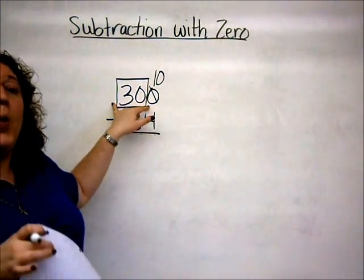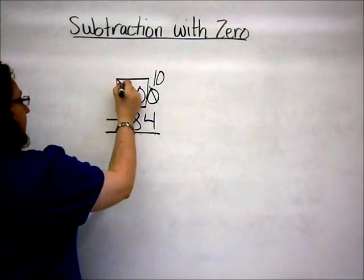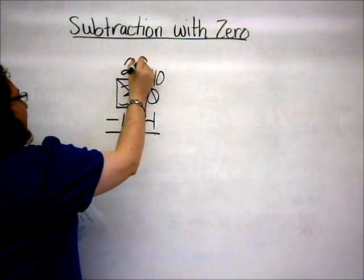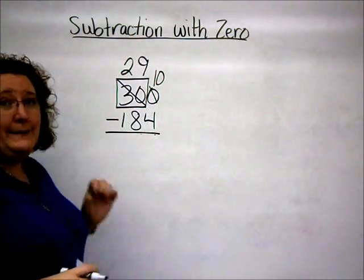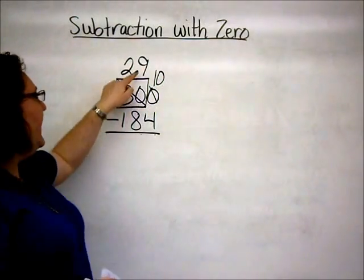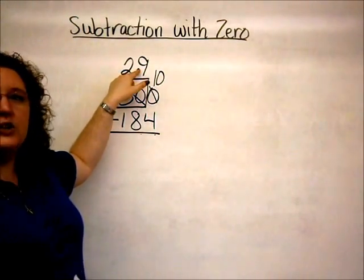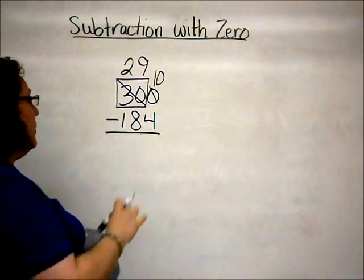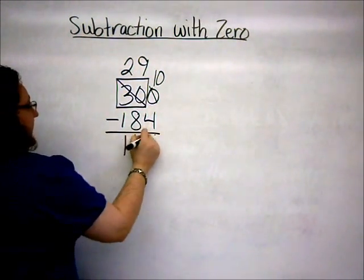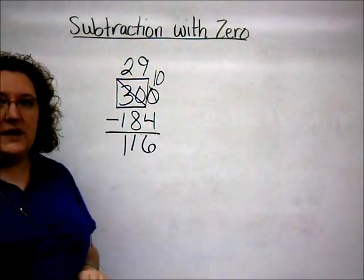We subtract one from thirty and we get twenty-nine, which automatically gives the student that nine in the middle that in most cases they neglect to regroup for. And of course, when we subtract, we still end up with the one sixteen that we had before.